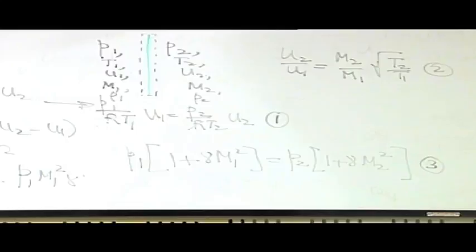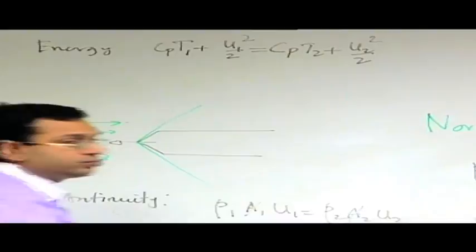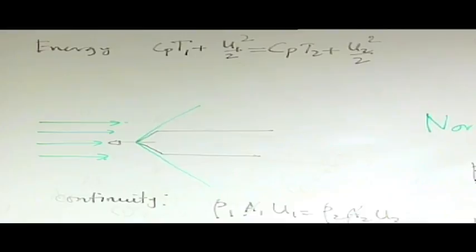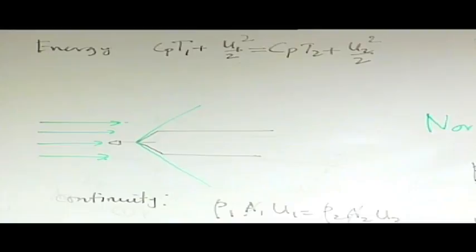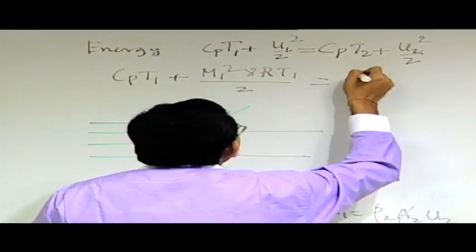We label these as equations 1, 2, and 3. The next important equation is the energy equation. For an adiabatic process — which is valid here — the first law gives Cp·T1 + U1²/2 = Cp·T2 + U2²/2. Substituting U1² = M1²·γRT1, we can express Cp in terms of γ and R as Cp = γR/(γ−1), so that γR/(γ−1) cancels, yielding T1·(1/(γ−1) + M1²/2) on each side.